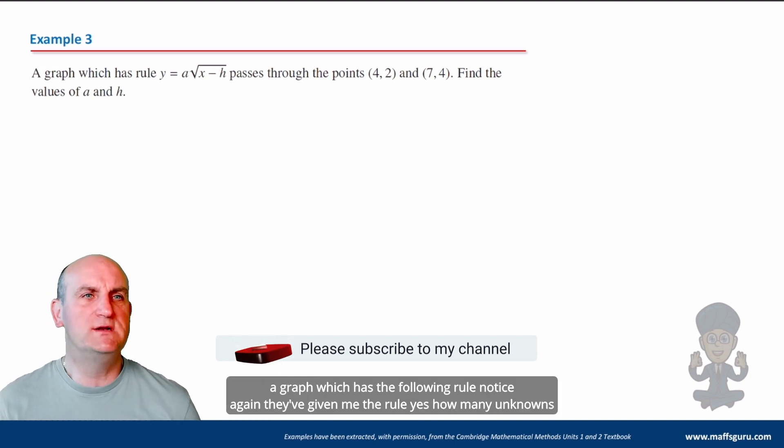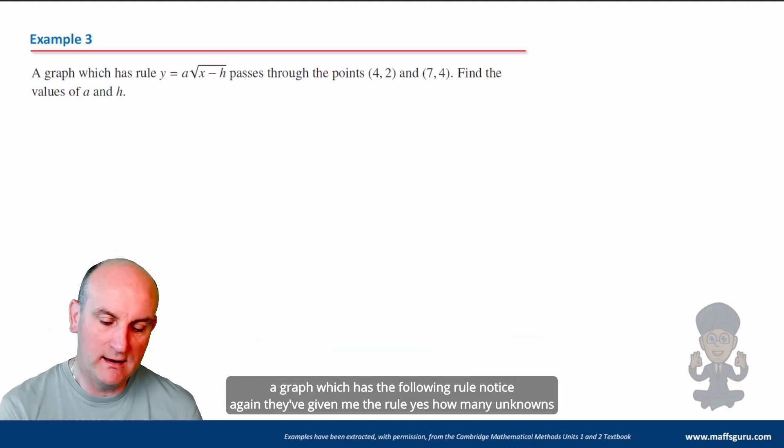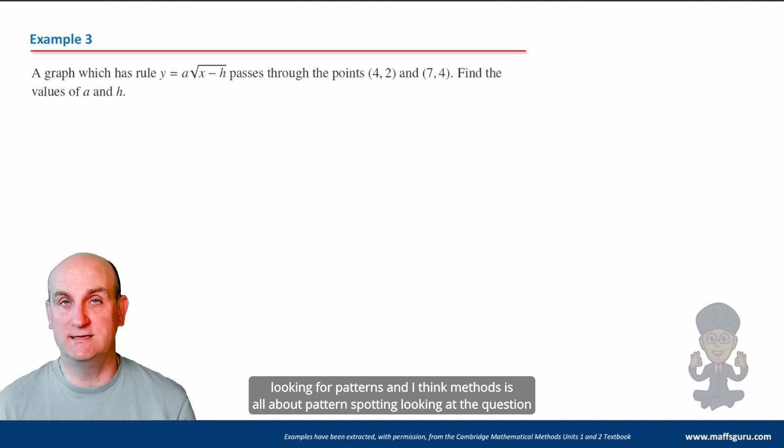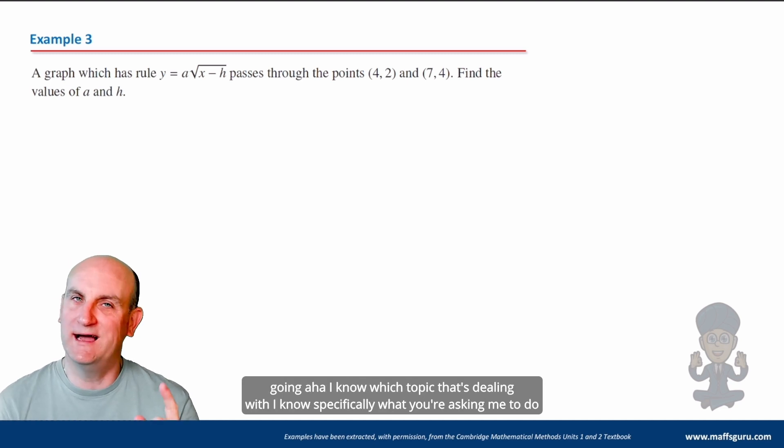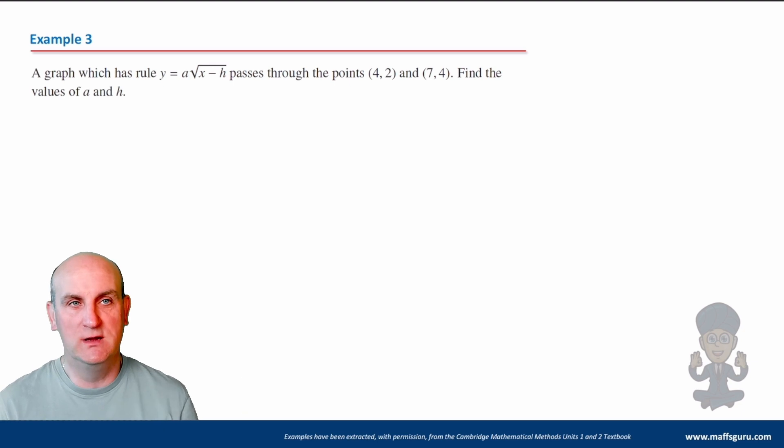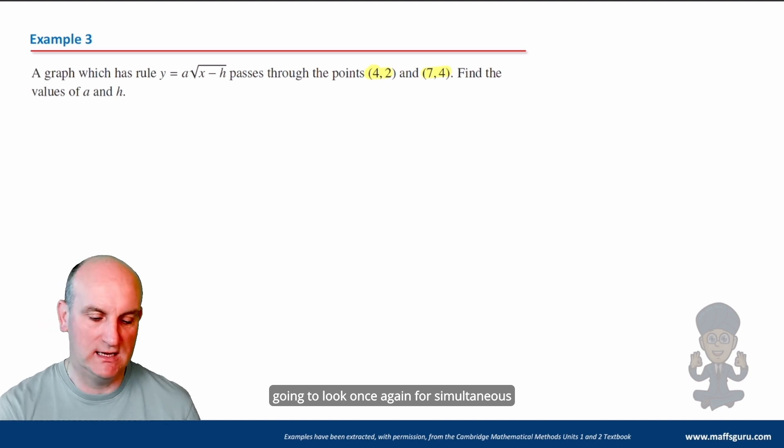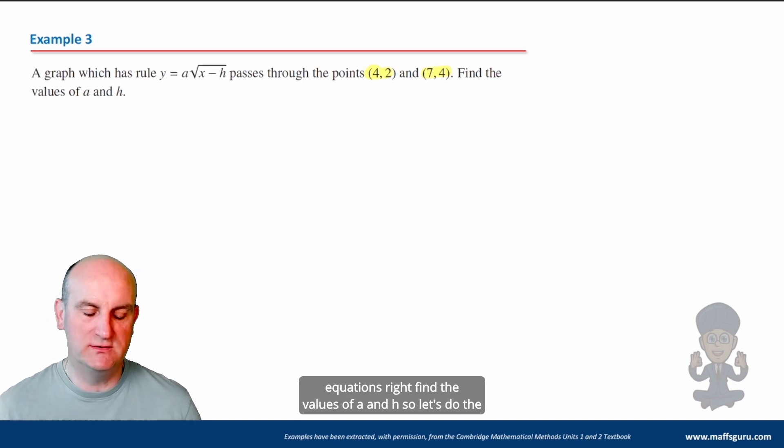Example three. A graph which has the following rule. Notice again, they've given me the rule. Yes. How many unknowns do I have? I have two unknowns. An a and an h. I'm starting to look for this in the question. I'm looking for patterns. And I think methods is all about pattern spotting. Looking at the question going, aha, I know which topic that's dealing with. I know specifically what you're asking me to do. And off we go. And again, the big hint here was the fact that they've given me two coordinates. So I'm going to look once again for simultaneous equations. Right. Find the values of a and h.